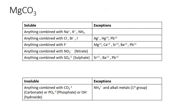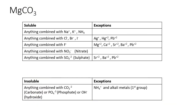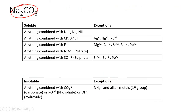For MgCO3: the table says anything combined with CO3 is insoluble, except if it's NH4 or any metal from group 1. Magnesium is in group 2, not group 1. So this exception doesn't apply, which means MgCO3 is insoluble — it forms a precipitate and cannot be pulled apart.